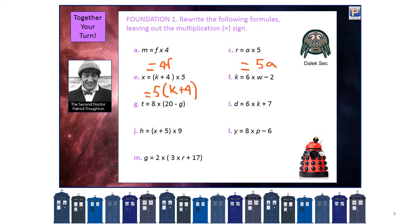Looking at another example: G equals 2 outside of brackets. Inside, 3 times R is written as 3R plus 17 — we can't simplify the 17 so we leave it — then close brackets.